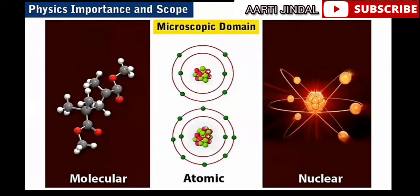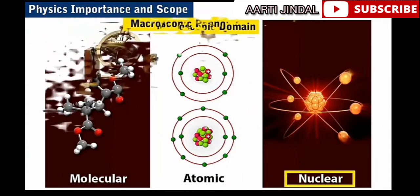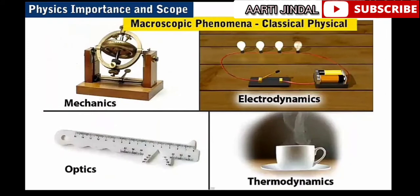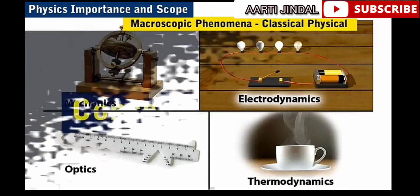Whereas the microscopic domain deals with molecular, atomic, and nuclear phenomena. In our study of physics, we will look at macroscopic phenomena under classical physics that includes mechanics, electrodynamics, optics, and thermodynamics.